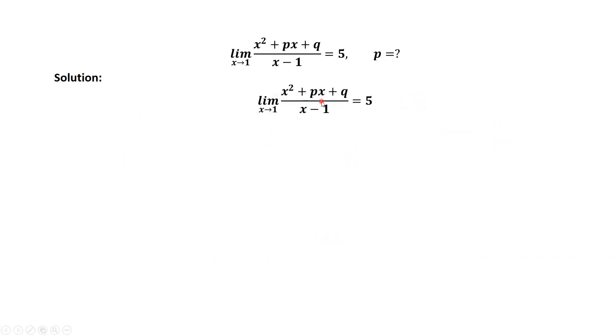From this given limit, we know that the limit of the denominator x minus 1 as x goes to 1 equals 0. x equals 1 is the root of the denominator. x equals 1 must be the root of the numerator.